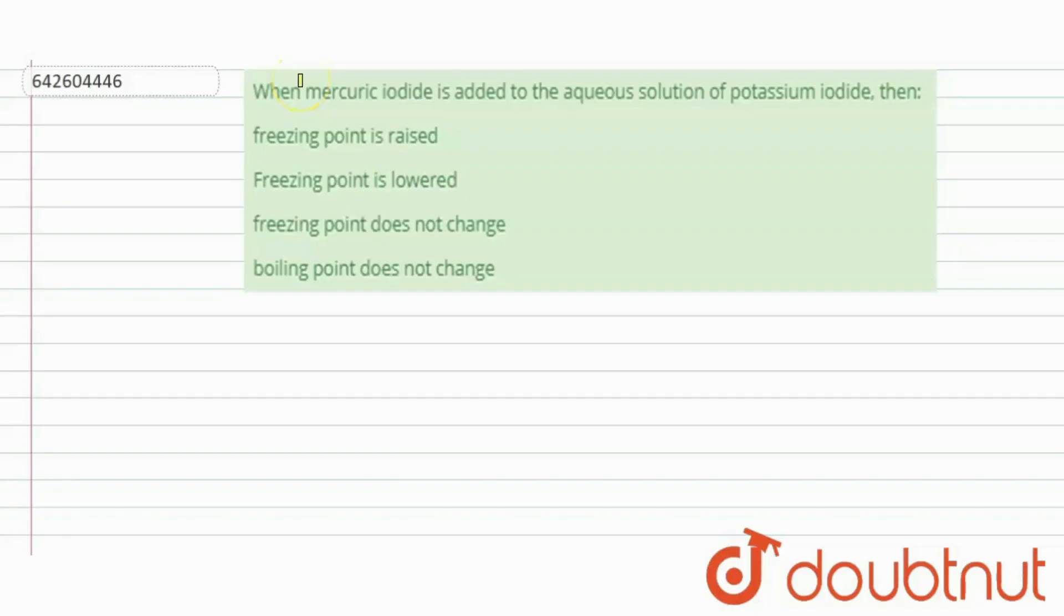Hi everyone, let's start a question. The question says that when mercuric iodide is added to the aqueous solution of potassium iodide, then what will happen?